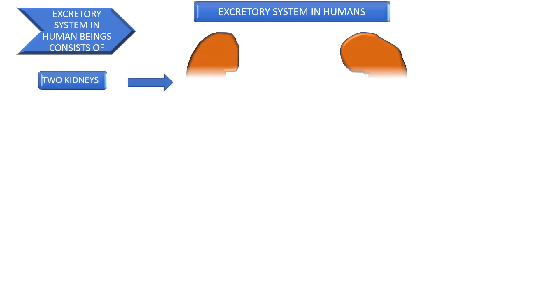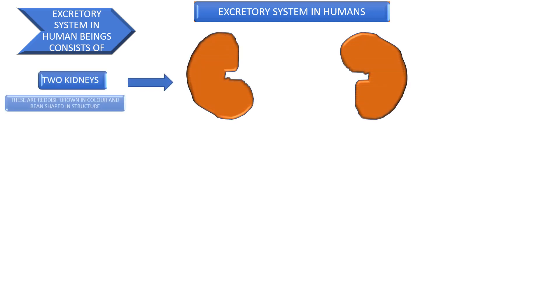Excretory system in human beings consists of two kidneys. These are reddish brown in color and bean shaped in structure.